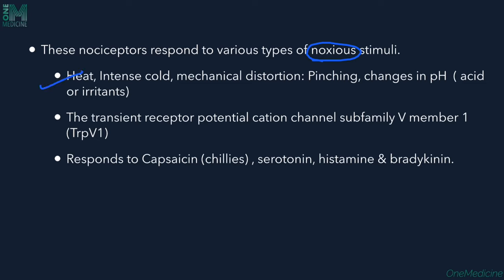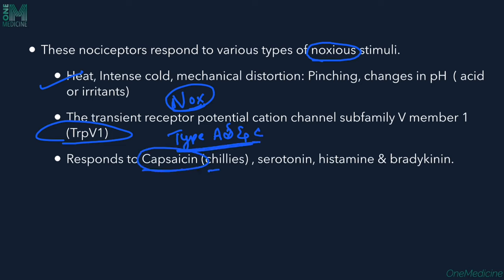These nociceptors respond to various noxious stimuli — any stimuli that causes physical injury to tissue — including heat, intense cold, mechanical distortion, pinching, changes in pH, and irritants. The transient receptor potential cation channel subfamily V member 1 (TRPV1) is responsible for activating the nerve fiber. A-delta and C fibers respond to capsaicin, serotonin, histamine, and bradykinin, all of which can themselves produce pain.